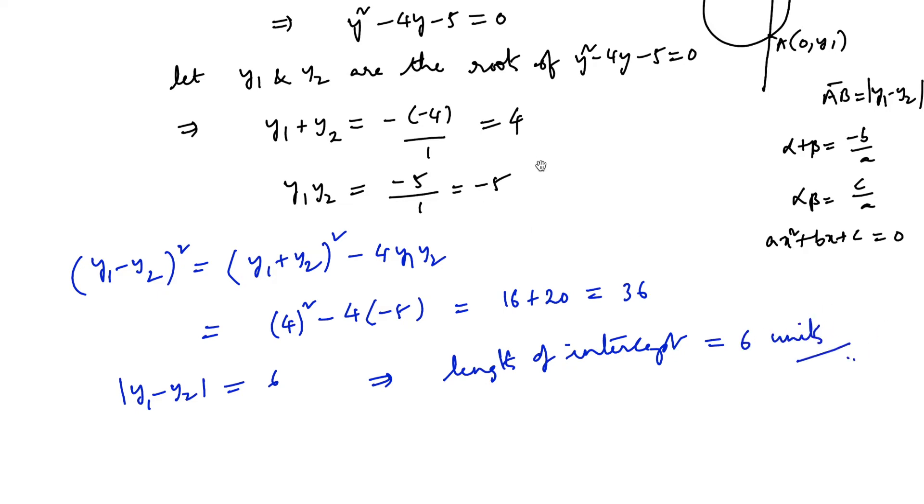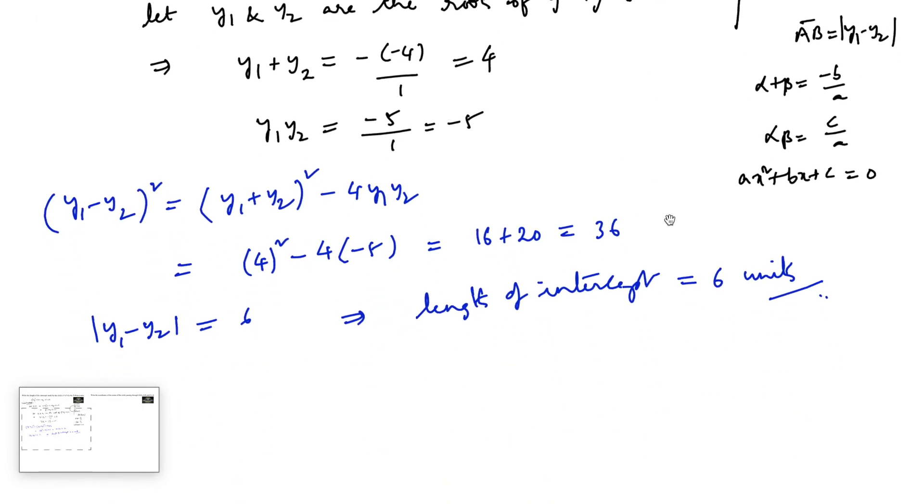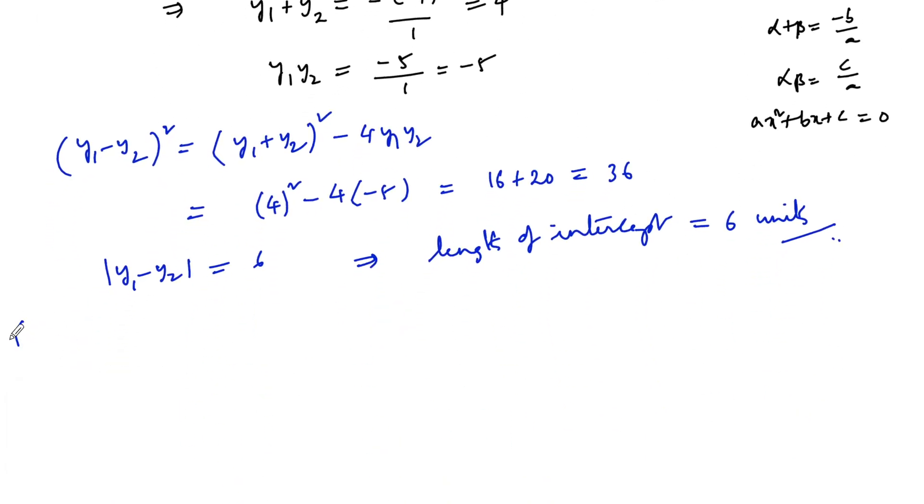This is the direct method. By using the formula, if x² + y² + 2gx + 2fy + c = 0 be the general equation of a circle,